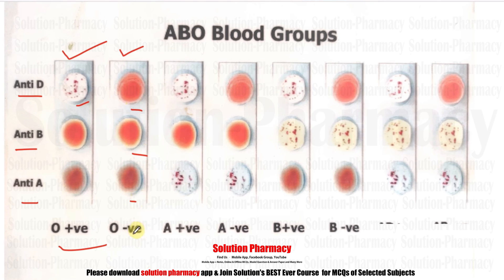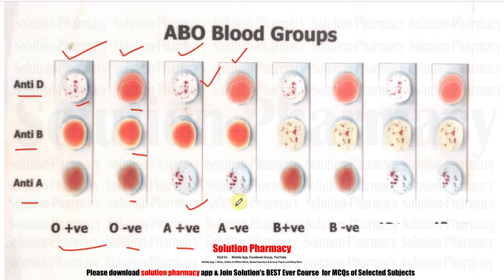In the third slide, agglutination reaction occurs with anti-A and anti-D, so the blood group is A positive. This A positive blood group has A agglutinogen (A antigen) on the surface of the RBC, which shows agglutination reaction with anti-A agglutinin (antibody A). In the fourth slide, agglutination reaction occurs only in the drop to which anti-A is added, so the blood group is A negative.